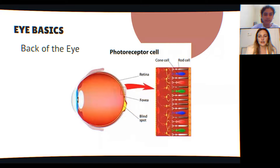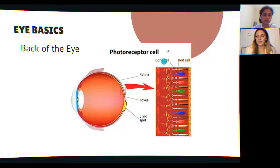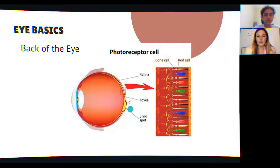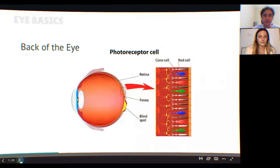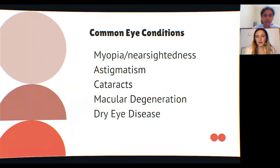The retina has many different layers and is where light is transformed into energy — that signal is sent to our brain, and that's when we see. It contains cone cells and rod cells: cones carry color and central vision, rods handle black and white and peripheral vision. The optic nerve is where your blind spot is, sending information to the brain. Another important part is the macula; the fovea at its center is your clearest central vision.